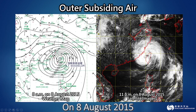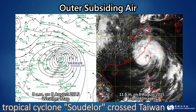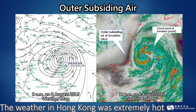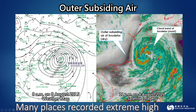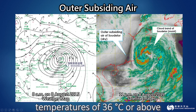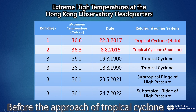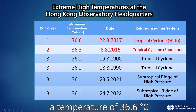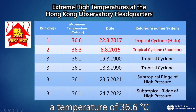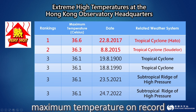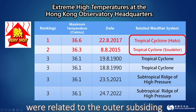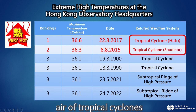On 8 August 2015, tropical cyclone Soudalor crossed Taiwan. Affected by the outer subsiding air ahead of it, the weather in Hong Kong was extremely hot, with many places recording extreme high temperatures of 36 degrees Celsius or above. Before the approach of tropical cyclone Hedo to Hong Kong in 2017, the observatory headquarters recorded a temperature of 36.6 degrees Celsius, which was the highest maximum temperature on record. Indeed, the top two extreme high temperatures recorded at the observatory were related to the outer subsiding air of tropical cyclones.